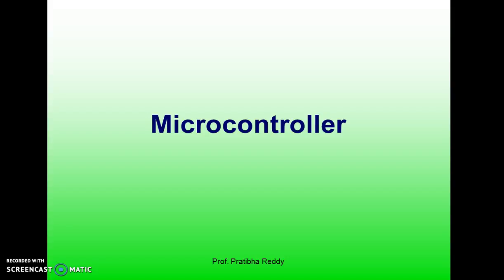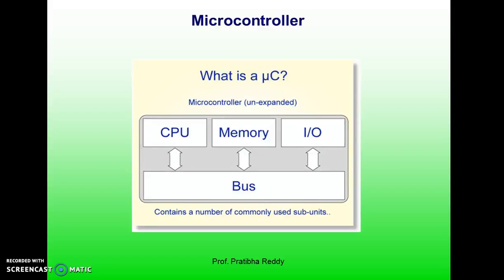This is not the case with microcontrollers. A microcontroller has a CPU — meaning a microprocessor — in addition to a fixed amount of RAM, ROM, IO ports and a timer, all on a single chip. In other words, the processor, RAM, ROM, IO ports and timer are all embedded together on one chip.